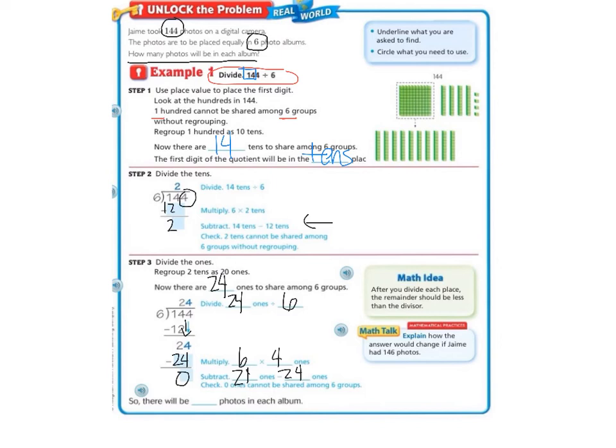So my answer, remember, is at the top, so it's going to go in 24 times. So if there are 6 albums, each album will have 24 pictures in it. We will continue example 2 tomorrow in class.